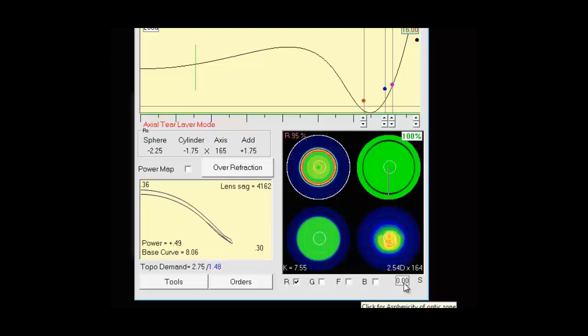And finally, we have this drop-down box with the S next to it for shape factor. And that will allow us to create a back aspheric optic zone. If that's set to zero, which is the default, we have an aspheric periphery to the lens for a spherical optic zone.